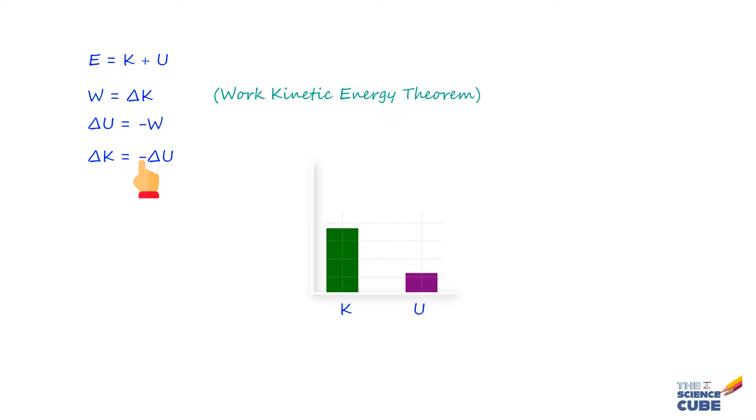Then if we expand both the sides, what we get is K2 minus K1 is equal to minus of U2 minus U1, where you could say K1 is the initial kinetic energy at some time and K2 is the final kinetic energy at some other time. And likewise for U or the potential energy, U2 is the final energy and U1 is the initial energy.